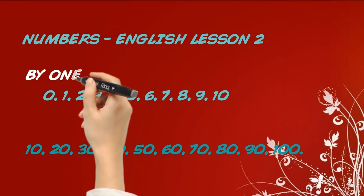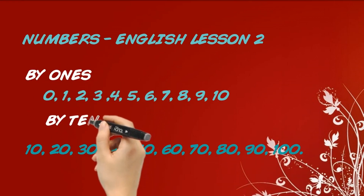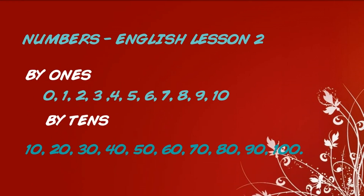English numbers to one hundred, by tens: ten, twenty, thirty, forty, fifty, sixty, seventy, eighty, ninety, one hundred.